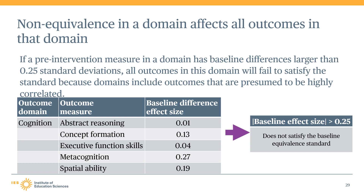This is because outcome domains are typically defined to include outcomes that are thought to be highly correlated. For example, imagine a study was interested in measuring intervention impacts on five outcome measures in the cognition outcome domain. These five outcome measures included abstract reasoning, concept formation, executive function skills, metacognition, and spatial ability.